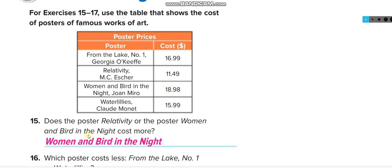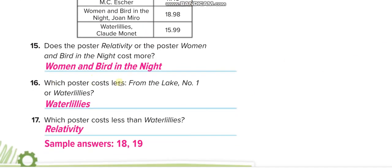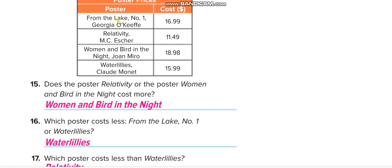Which poster cost less, from the Lake Number One? Where is Lake Number One? Here is Lake Number One, or 16. This one is 15. Water Lily is 15, and Relativity is 11. So Relativity.